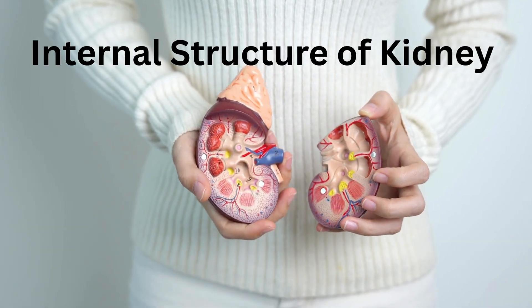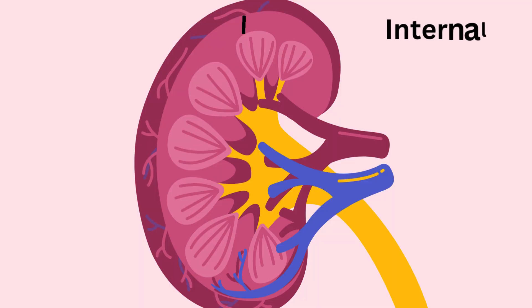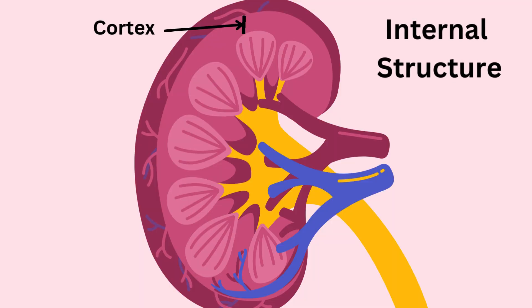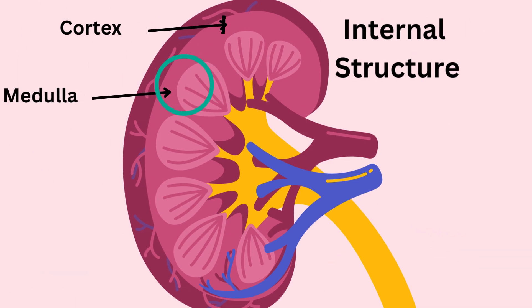The kidney has two main zones. The outer zone is called the renal cortex and the inner one is the medulla, which consists of renal pyramids.